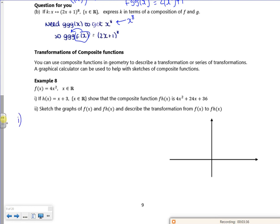Okay, so part one. f of h of x is 4 lots of, replace the x with an x plus 3, squared. So f of h of x is 4 lots of x squared, 6x plus 9. f of h of x is 4x squared, 24x, 36. Perfect.